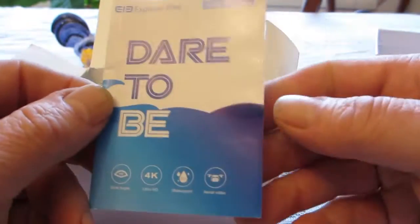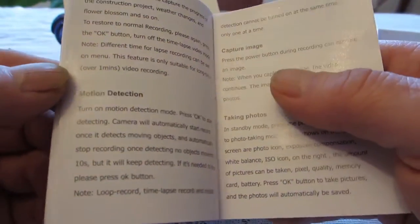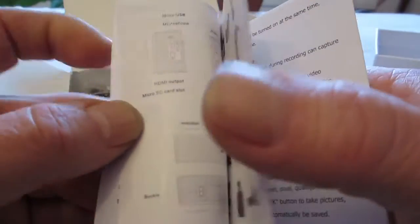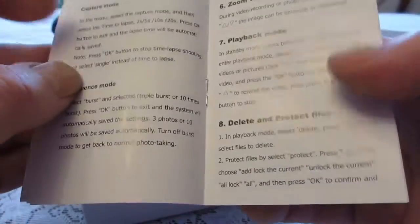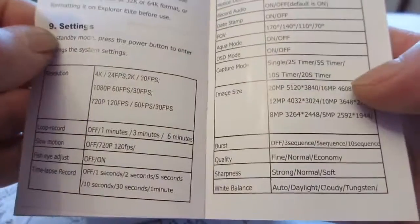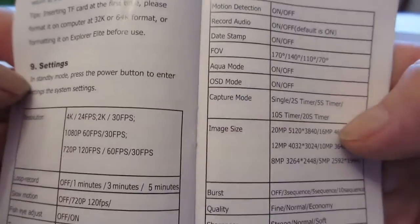First thing you see is a Dare 2B instruction manual. I looked at it, it's not that good. It's okay. It doesn't have any troubleshooting guide in it, but it's readable. The writing's large enough to read. It tells you about all the settings and things like that.